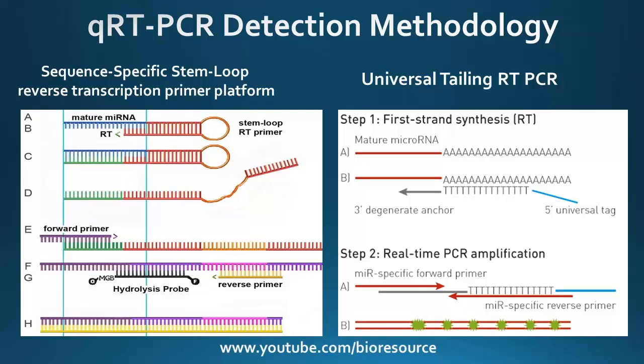In the stem-loop reverse transcription platform, both SYBR Green and hydrolysis probes can be used, whereas in universal tailing RT-PCR, SYBR Green is used as the detection dye for PCR.